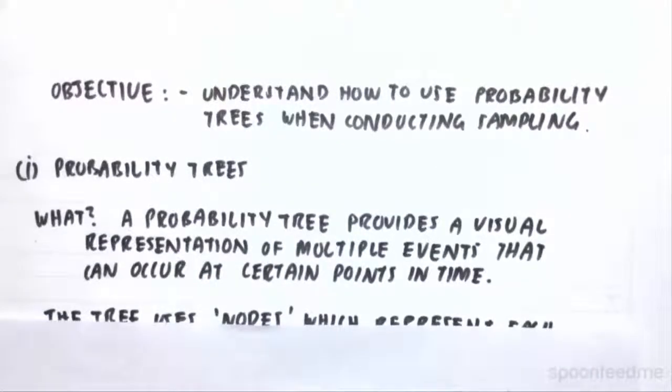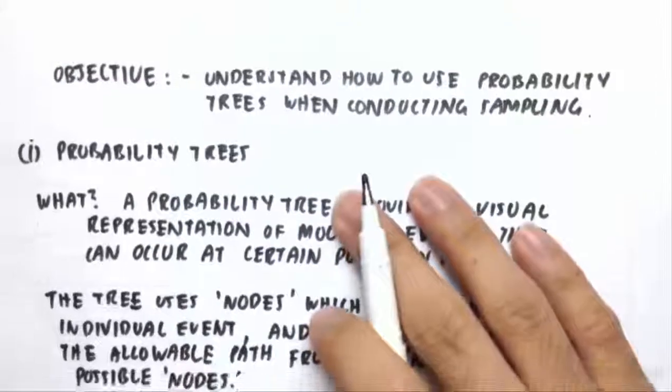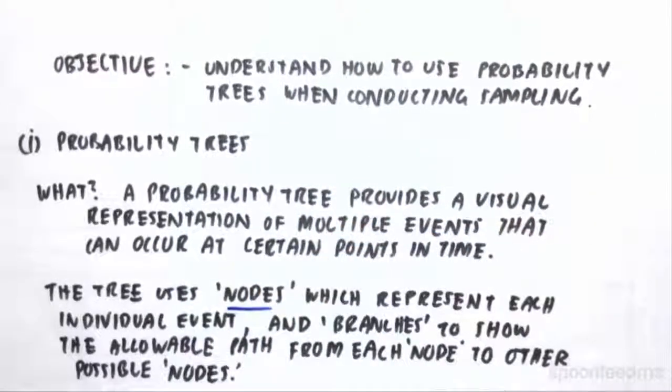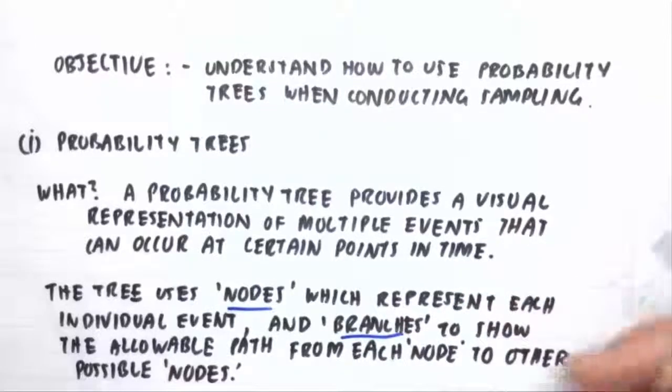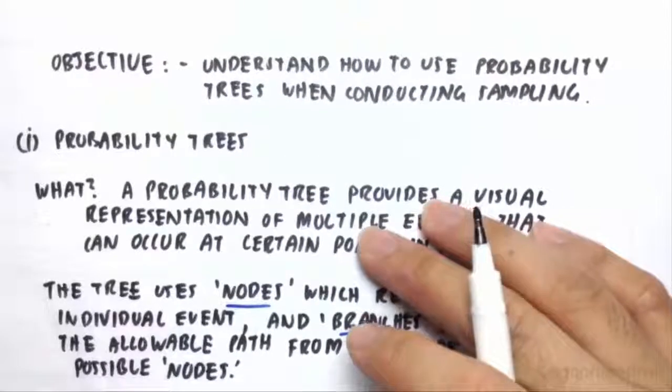So firstly, what is a probability tree? A probability tree provides a visual representation of multiple events that can occur at certain points in time. The trees use nodes which represent each individual event and branches to show the allowable path or possible path from each node to another possible node.